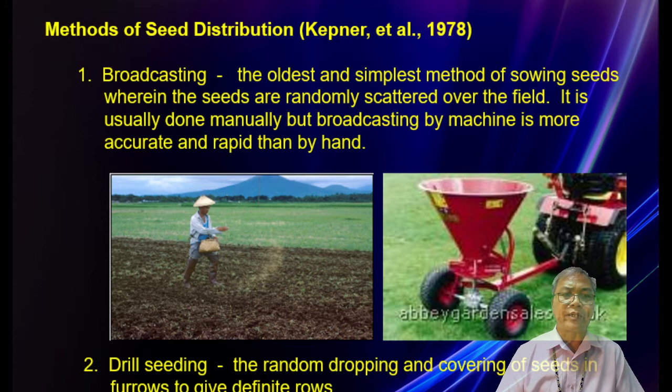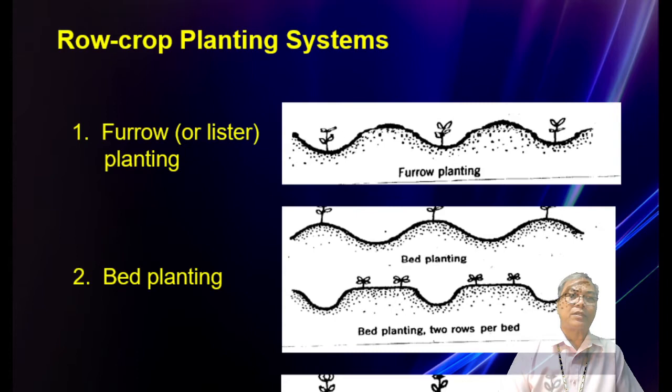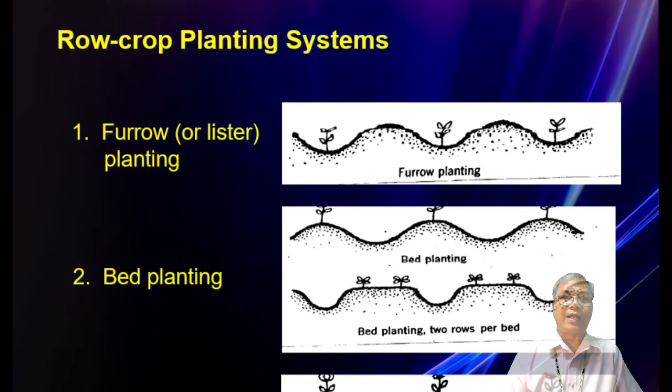In precision planting, single seeds are placed at equal intervals in rows. The crop planting systems include furrow or lister planting, bed planting, and flat planting. There is no definitive most advantageous system among these; it depends upon the type of crop being planted.